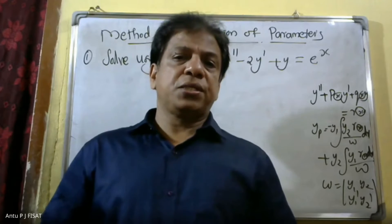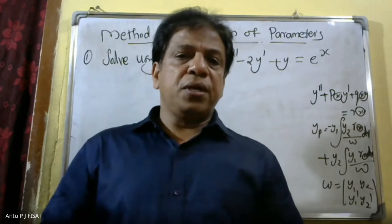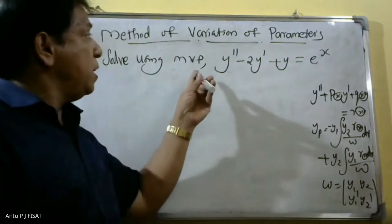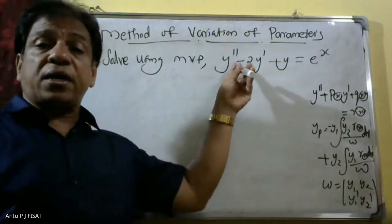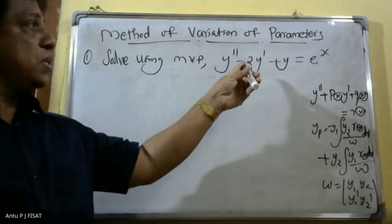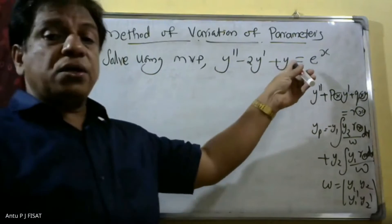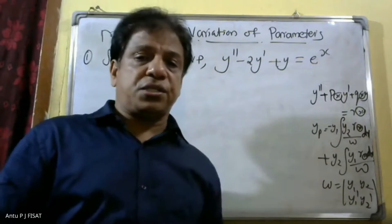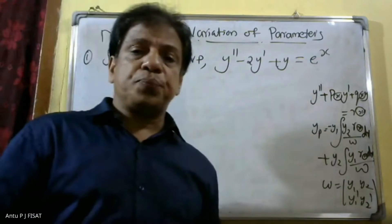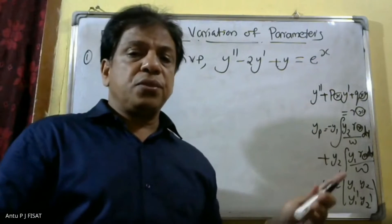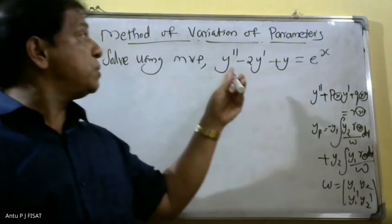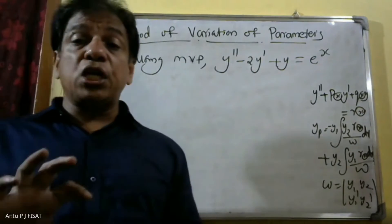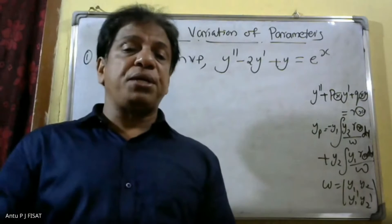Good morning students. Today we can solve second order equations — non-homogeneous second order equations where the right hand side is not equal to zero. We can solve this equation by using the method of variation of parameters.